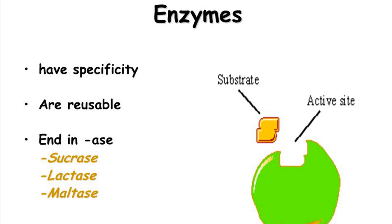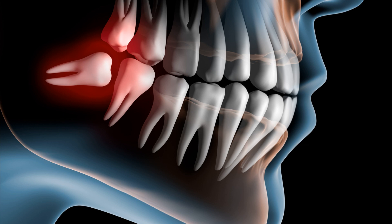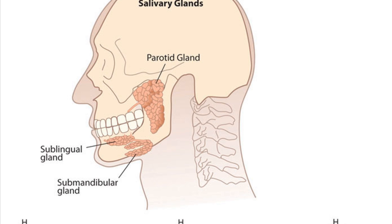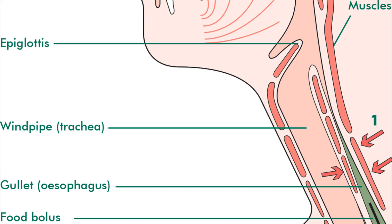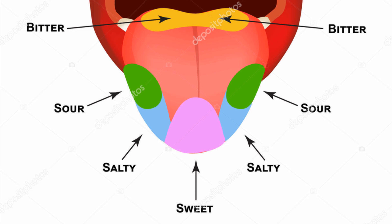The Mouth. Digestion begins in the mouth. The teeth help break down the food into small pieces. The salivary glands secrete saliva, which contains enzymes that help digestion and also moisten the food so that it can be easily swallowed. The tongue helps roll and push the food into the pharynx, and taste is also a function of the tongue.